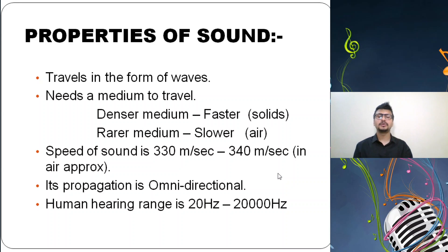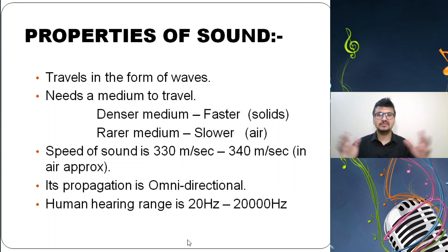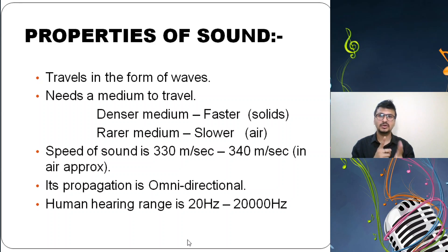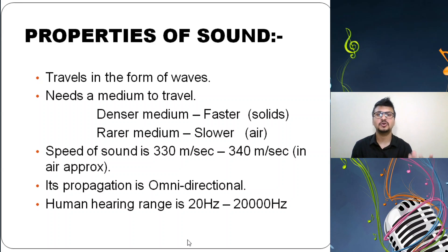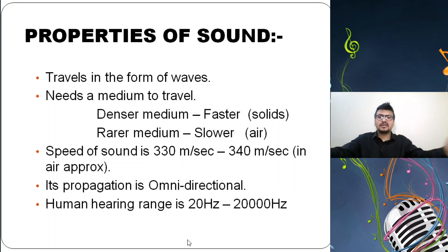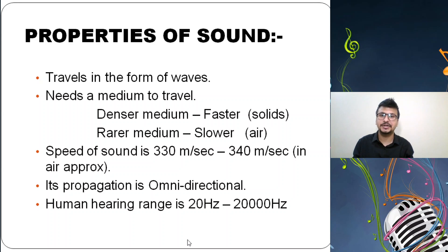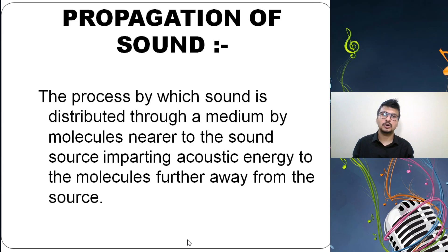Sound propagation is omnidirectional. Unidirectional means traveling one way, bidirectional means two directions, but omnidirectional means traveling all around the area of the origin of the sound. So when I say 'hi,' the sound travels in all directions — that is called omnidirectional. The human hearing range is 20 hertz to 20,000 hertz — this is very important and commonly tested.